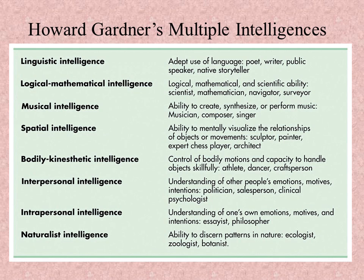Interpersonal intelligence means a person understands other people, is able to work with others — maybe even to the point of manipulating people. Examples include the politician and the salesperson. Intrapersonal intelligence, by contrast, is understanding yourself — your own motives and intentions — like philosophy. Then there's naturalistic intelligence: these people are very much into nature, animals, and botany, very in tune with the natural environment.